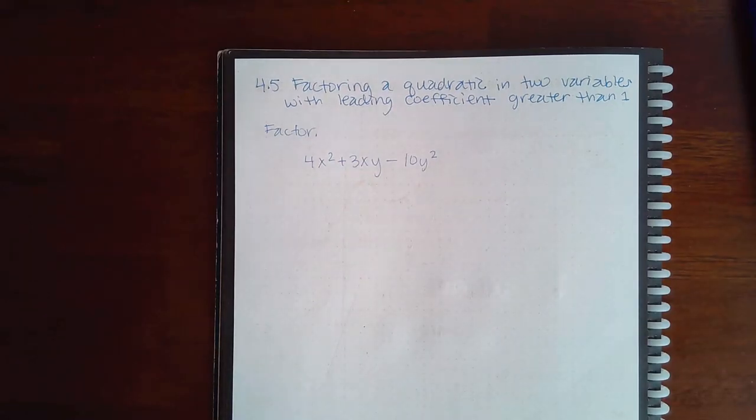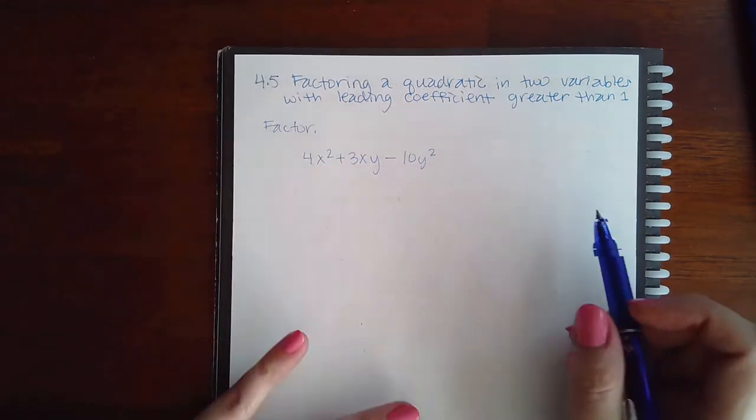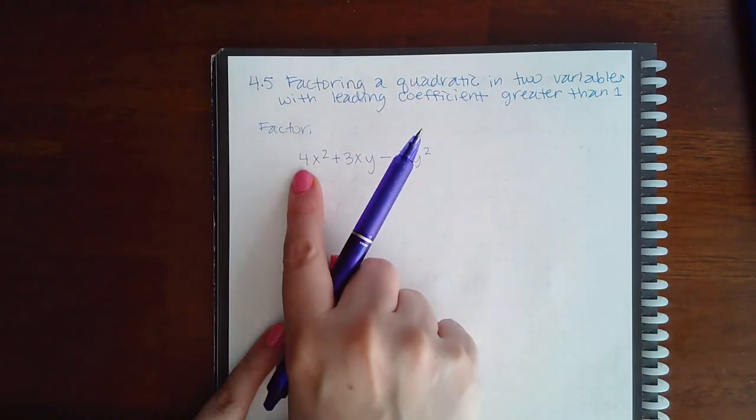So here we have factoring a quadratic in two variables with leading coefficient greater than one. I'm going to do everything exactly as I've done before whenever there's a number in one.